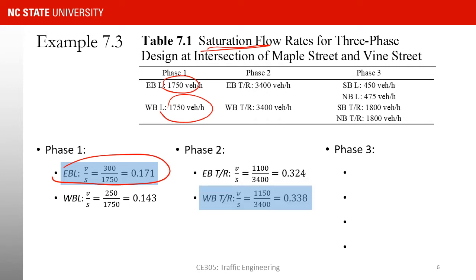For phase 2, eastbound through and right move together with westbound through and right. The eastbound through plus right volume totals 1,100, with a saturation flow rate of 3,400, giving a ratio of 0.324. For westbound through and right, the volume totals 1,150 with a saturation flow rate of 3,400, giving a ratio of 0.338. So the westbound through-right movement is the critical one in phase 2.